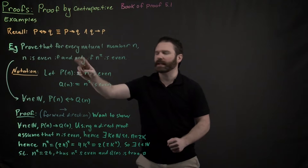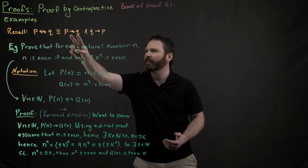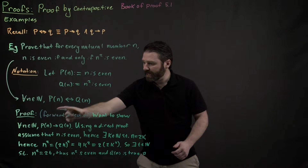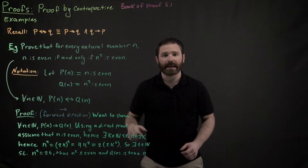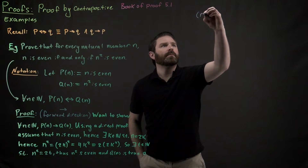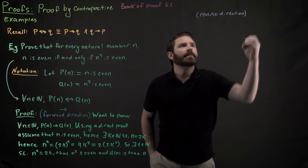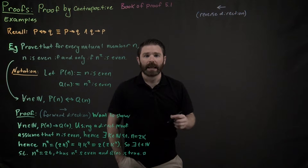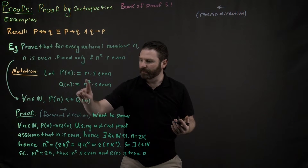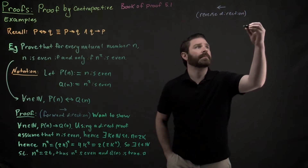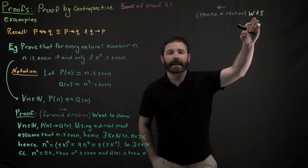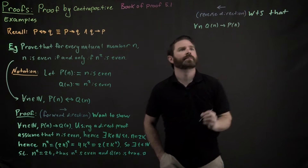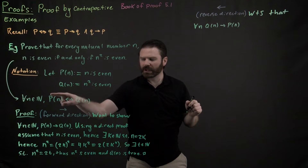Remember, we're trying to show a biconditional — an if and only if. So I've only finished the first half of my proof. I also need to show the other direction. For the second part of the proof, I need to do what's referred to as the reverse direction, abbreviated with a backwards arrow, indicating we are now trying to show that Q(n) implies P(n).